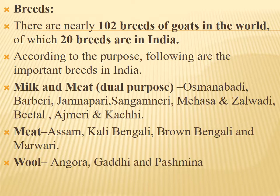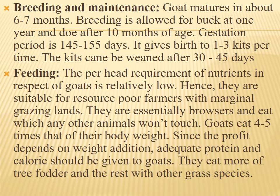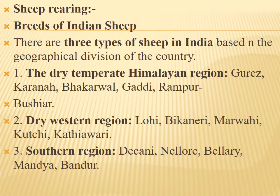Important breeds in India include meat purpose breeds: Assam Hill, Black Bengali, Brown Bengali, and Marwari. Wool purpose breeds include Angora, Gaddi, and Minna. For housing, goats can be maintained under stall-fed conditions. Successful goat rearing depends on proper site selection. Goats should be provided with a dry, comfortable, safe, and secure place, free from excessive heat, with cement flooring. Kids are kept under large inverted baskets until they are old enough to run with the herd.